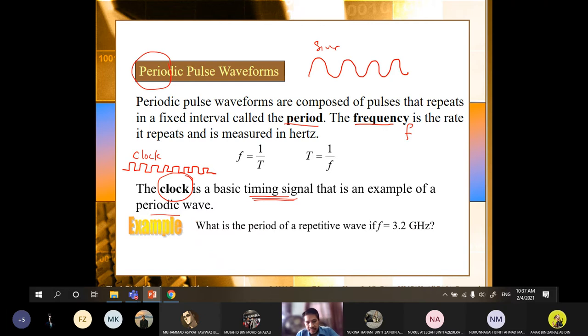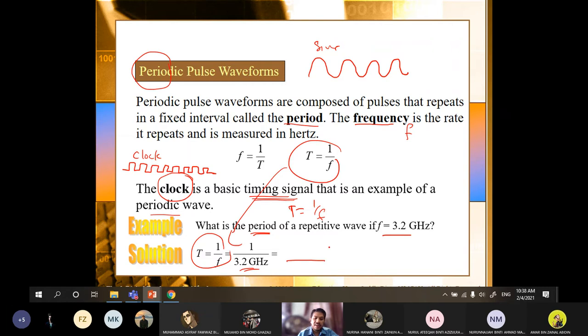So the question here, what is the period of a repetitive wave if the frequency is equal to 3.2 gigahertz? So you can calculate this. So if the question asks you, what is the period? So period is basically the T. T is equal to one over F. So use this formula. Put the value of the frequency here and then you can get what is the period in terms of seconds.